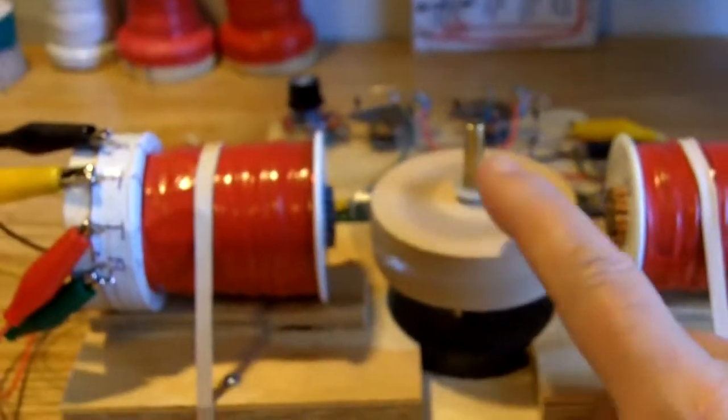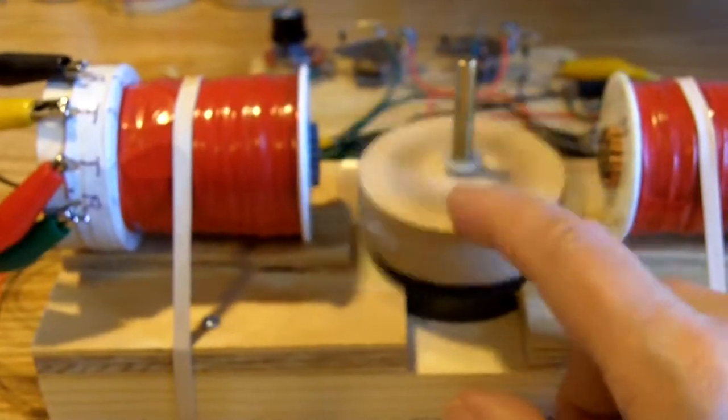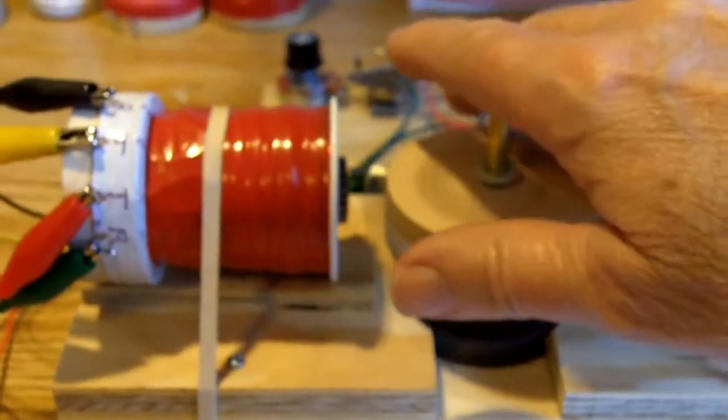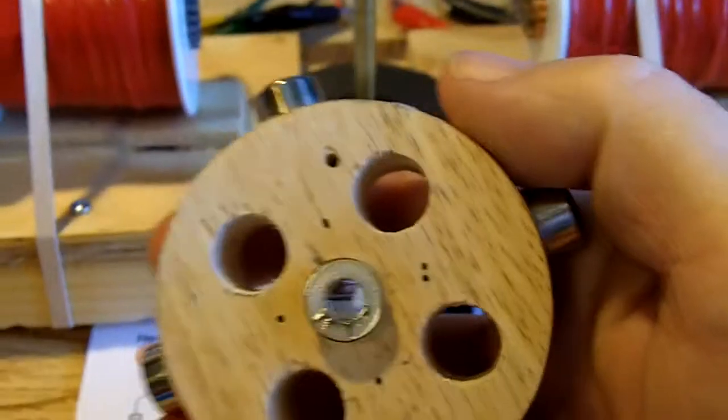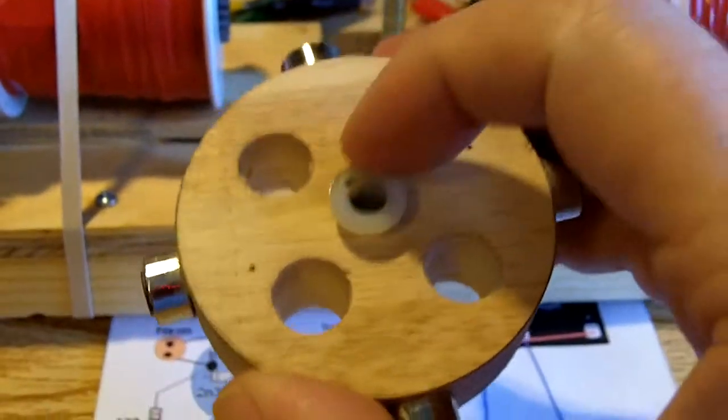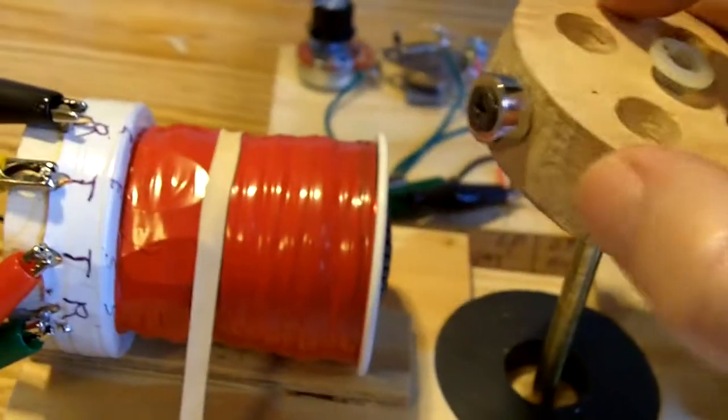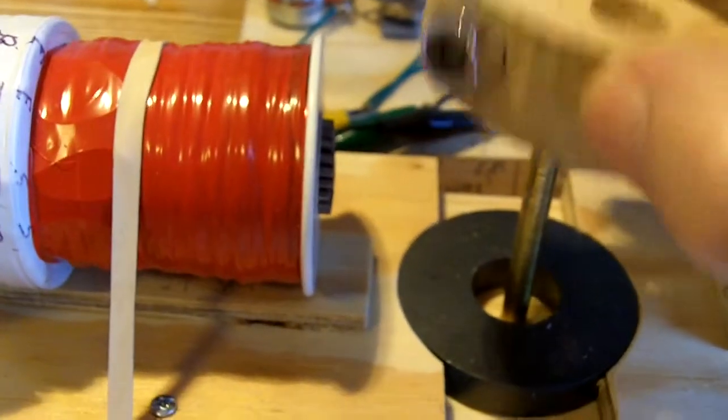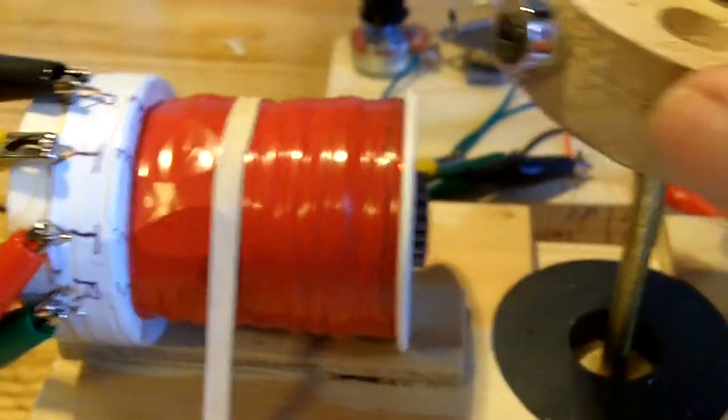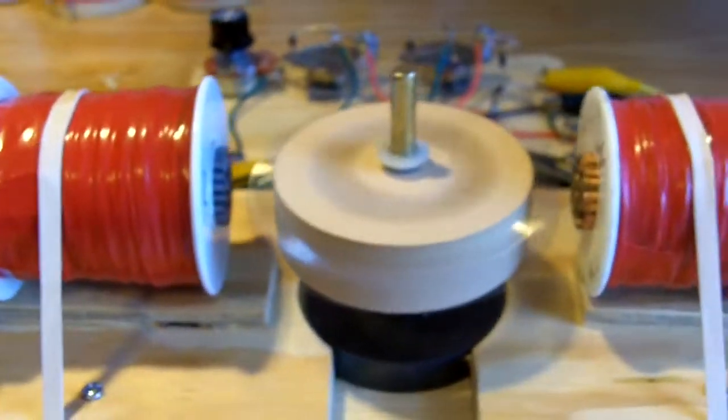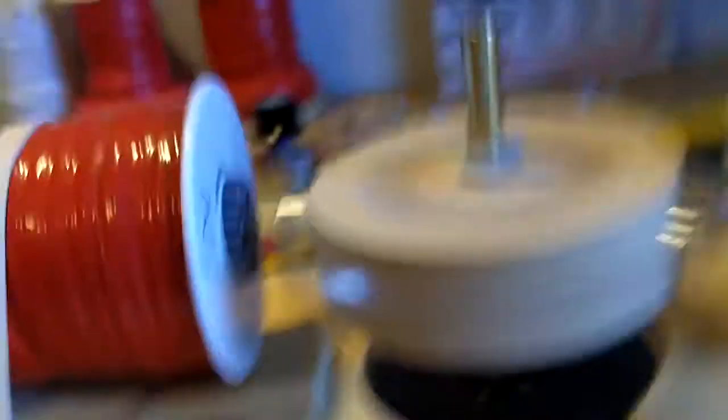I really get a kick out of this little guy. He's just sitting on there. There's a couple of fiber bushings, a brass shaft. Get it back on there. There we go. Pretty neat.